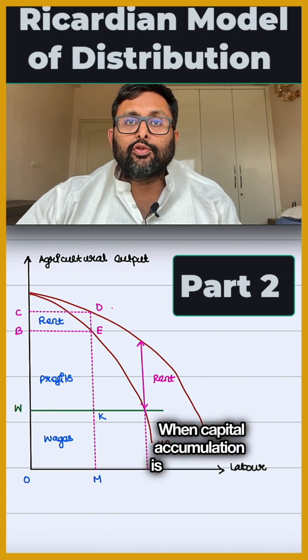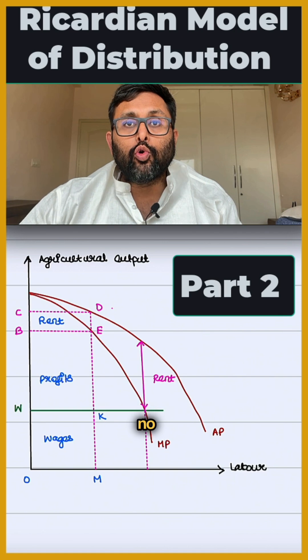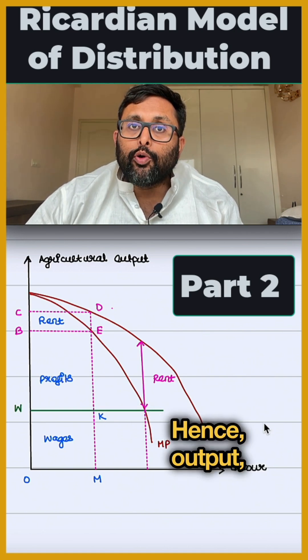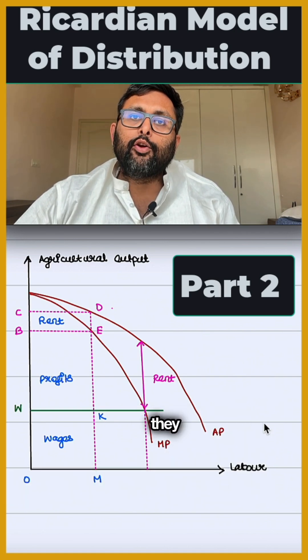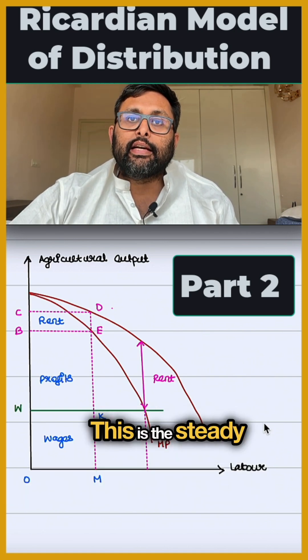When capital accumulation falls, there will be no growth in the economy. Hence, output, income, and employment all are going to stagnate. This is the steady state.